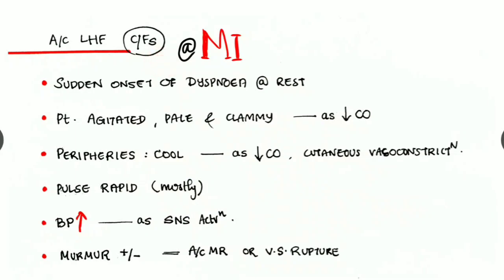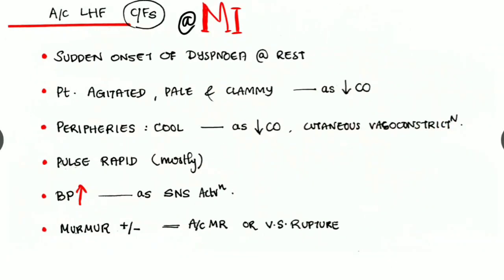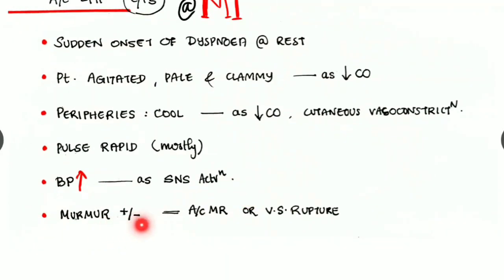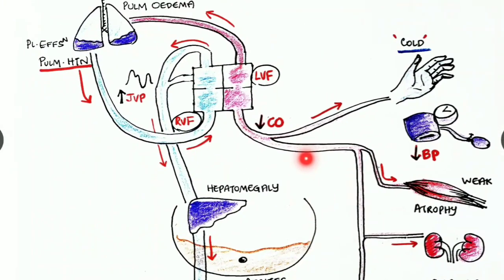The clinical features of left heart failure: commonly seen in myocardial infarction, it causes sudden onset of dyspnea at rest. The patient is agitated, pale, and clammy. As there is reduced cardiac output, the peripheries are cool with cutaneous vasoconstriction, as blood is diverted to vital organs. The pulse is rapid. Blood pressure is increased due to sympathetic activation. It can present with or without a murmur; a murmur may be due to acute mitral regurgitation or ventricular septal rupture.